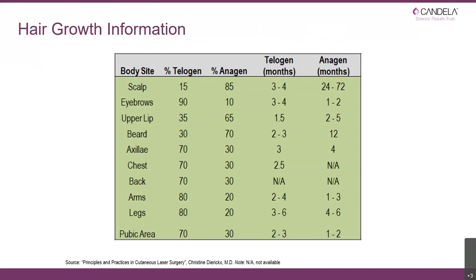I'm not going to go through this whole chart, but it shows the percentage of anagen hair in different parts of the body. You can see on the scalp we have up to 85% anagen hair at any one time. Moving down the body, the axilla — the underarms — is around about 30%, and similarly the bikini line is at 30%.